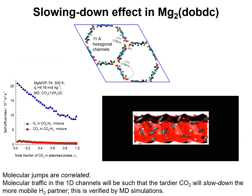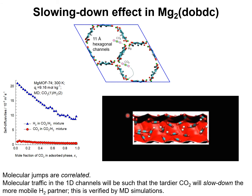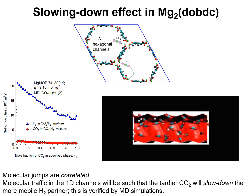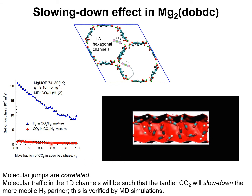This animation shows the motion of gas molecules CO2 and hydrogen, shown by white spheres, along the 1D channels of magnesium MOF74. The most strongly adsorbed CO2 prevents hydrogen from traversing long distances along the 1D channel. The slowing down of hydrogen due to the presence of the most strongly adsorbed CO2 is shown here in the MD data for the self-diffusivities in a mixture of CO2 and hydrogen at a constant total loading.